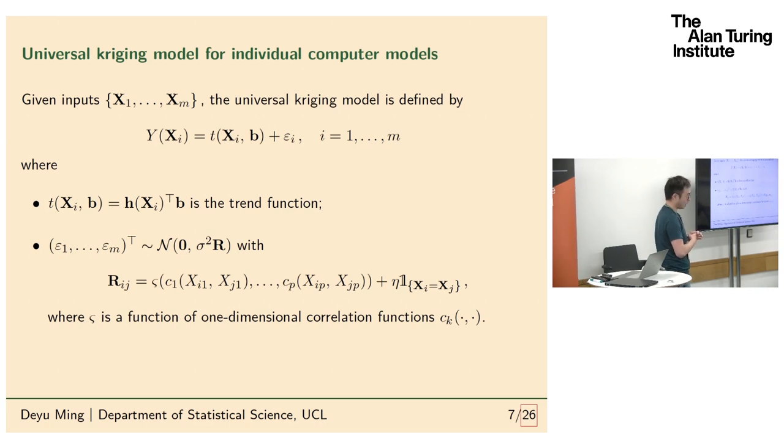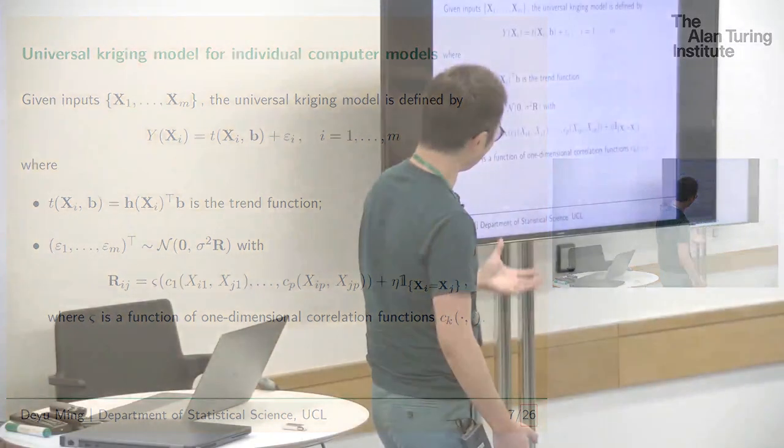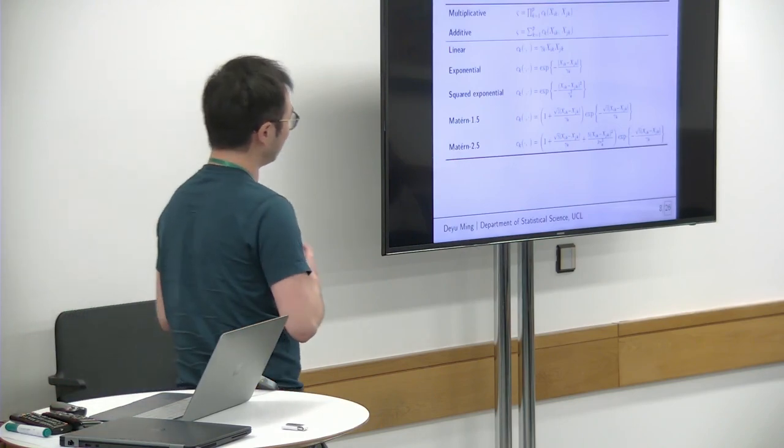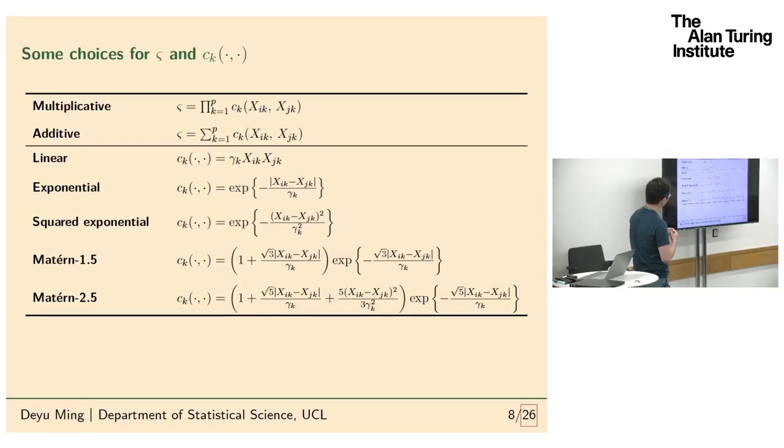We use a universal kriging model for the individual computer models to construct the emulators. I specify the kernel function in a very general form. These are one-dimensional kernels for each dimension, and the way they are combined together I assume a non-function. I didn't assume it's a multiplicative form or any specific form. It can be different forms, so psi is just a function. There are different types of ways you can choose to combine the one-dimensional kernel functions. You can use a multiplicative way, which is what ARD normally uses, and also you can use additive. I need additive here because in some physical problems, like earthquake ones, the inputs have additive effects on output rather than interactions. So it'll be interesting to add additive here.